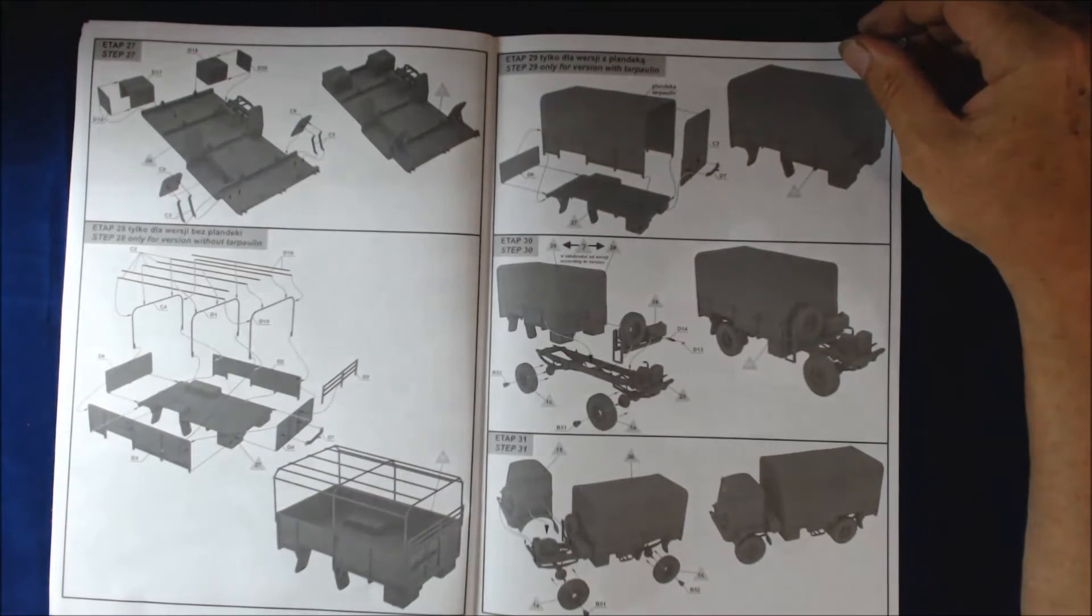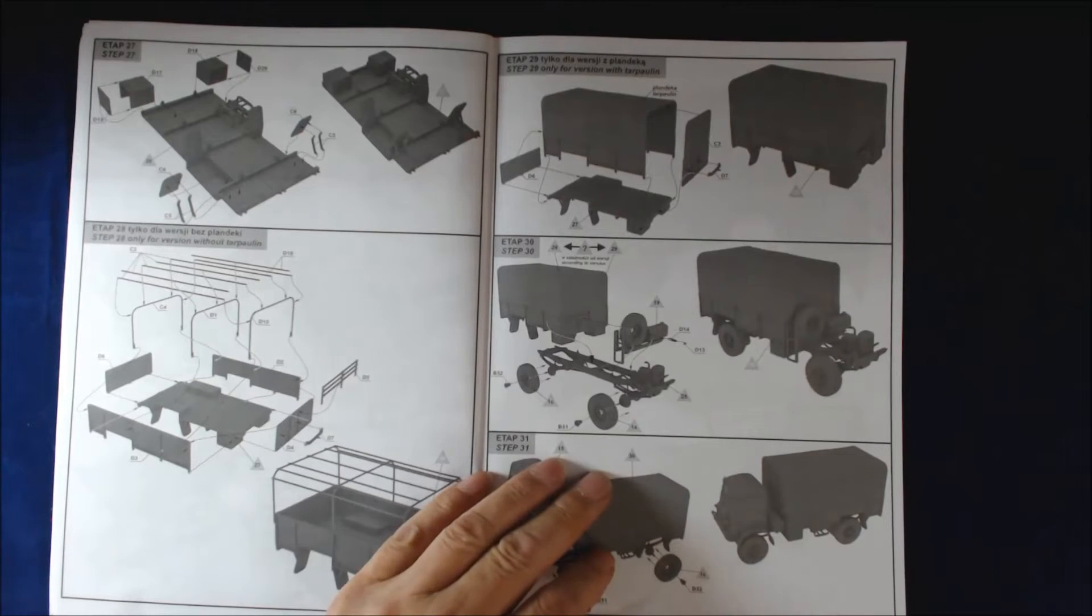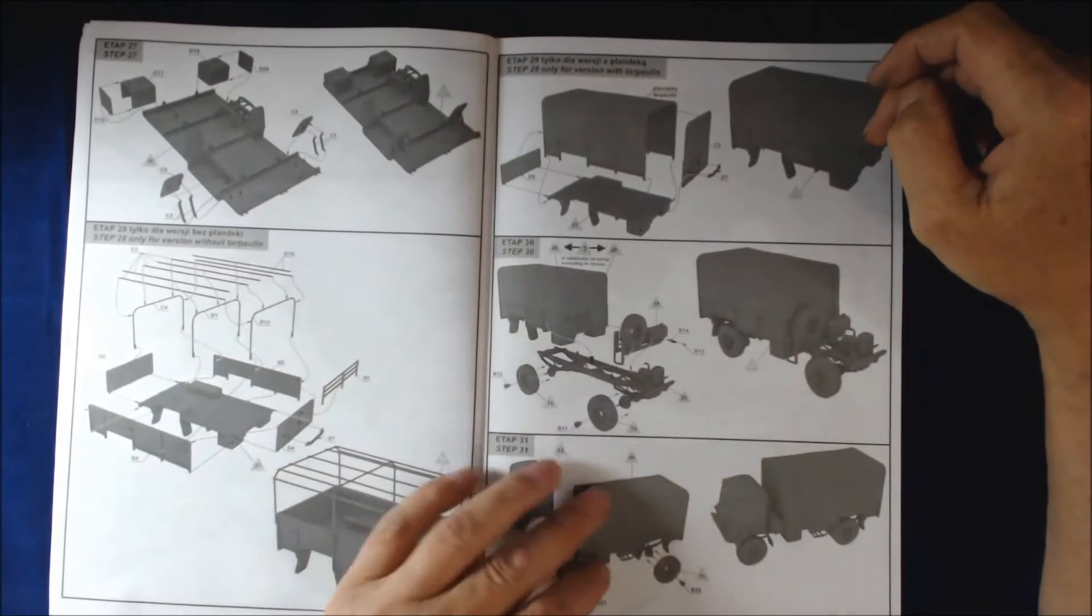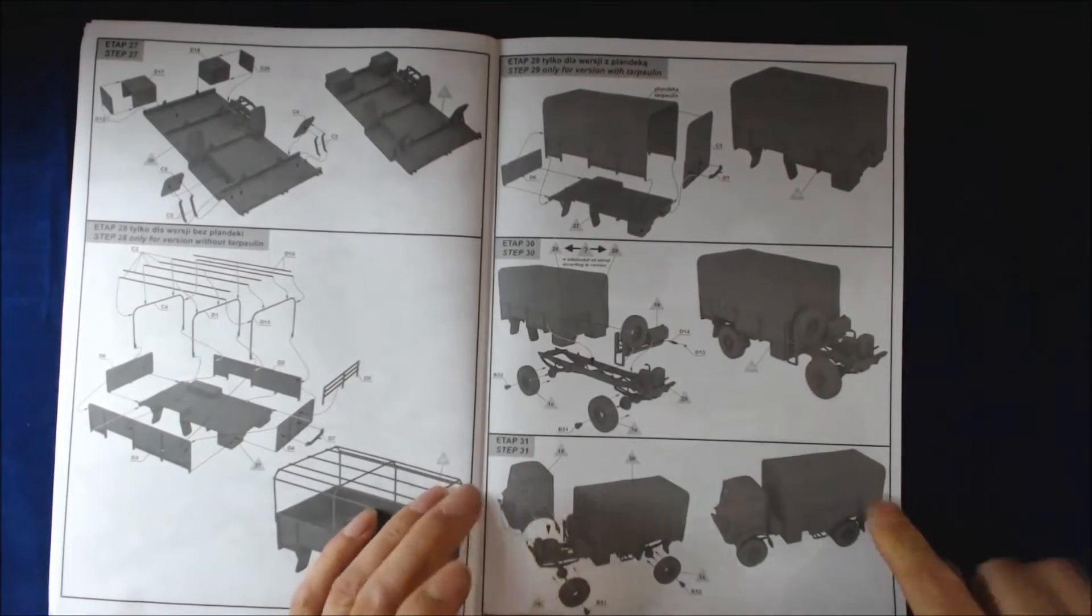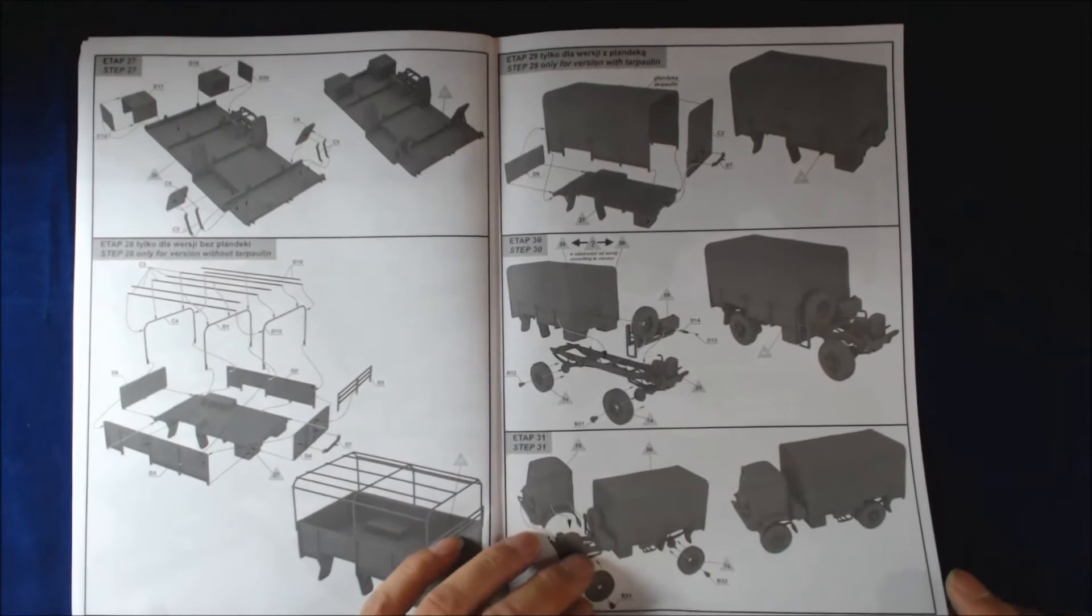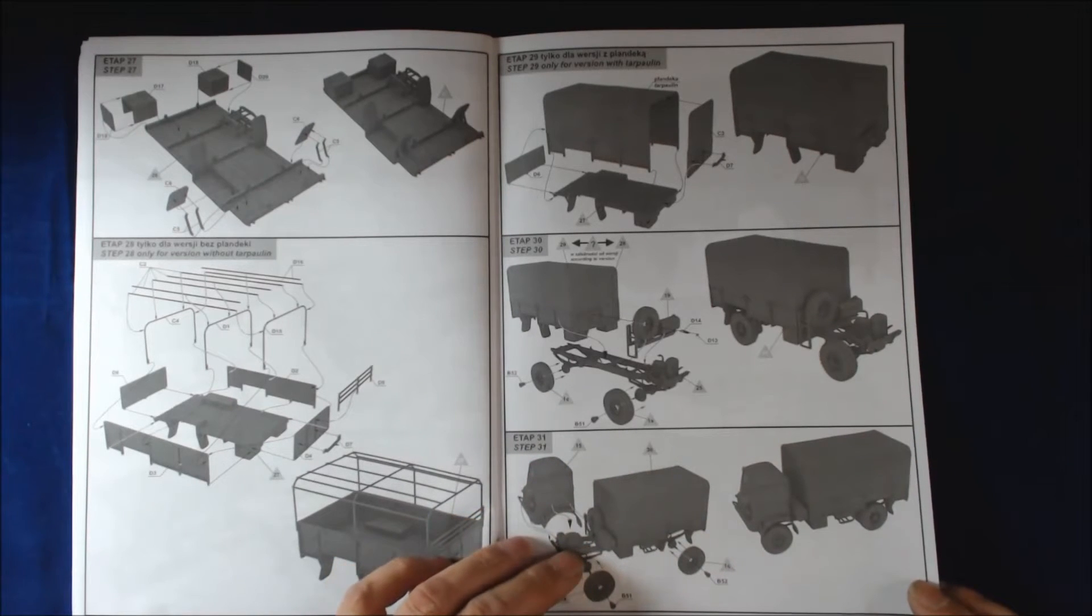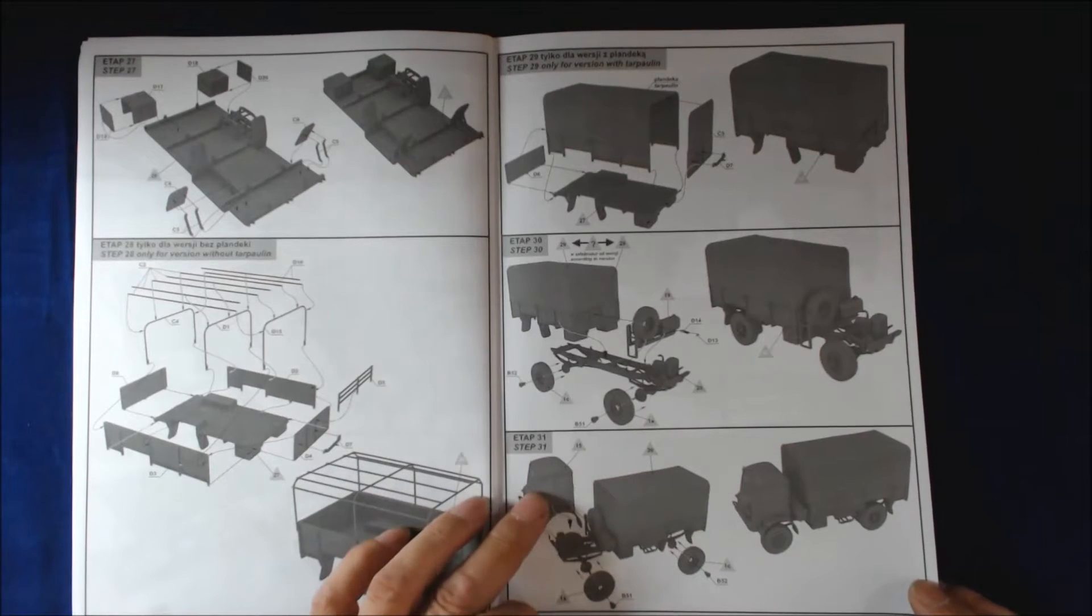Mudguards. You've got an option here, you can have this as just an open frame or you can have it as a closed top. The cab and the rear assemble separately, then you just put it all together.